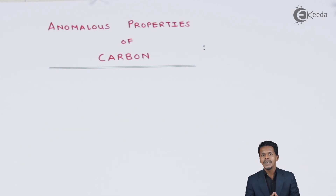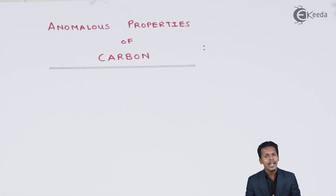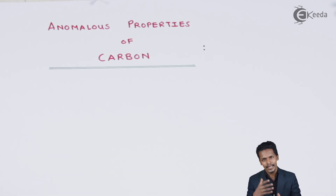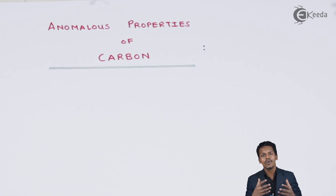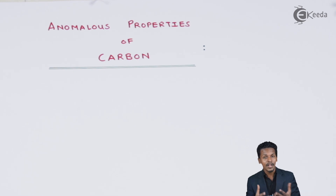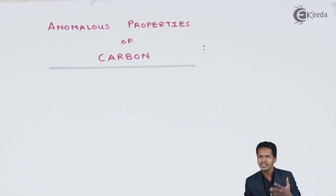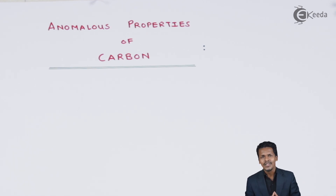Now let me discuss another property which we have not discussed earlier. Carbon has a special property known as catenation. Catenation is the formation of a bond with similar elements. That's the reason carbon is so widely spread throughout the world in the form of cellulose, starch, food, plastic, and polythene — carbon is present everywhere.